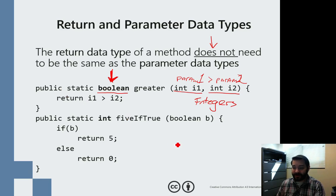So if I invoked greater, for example, I could do greater 10, 5. What I'm going to get is i1 is going to be 10, i2 is going to be 5.